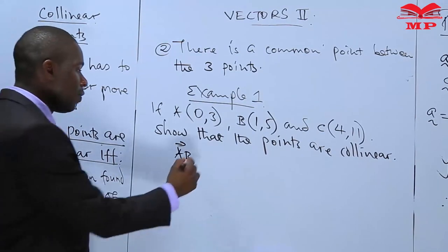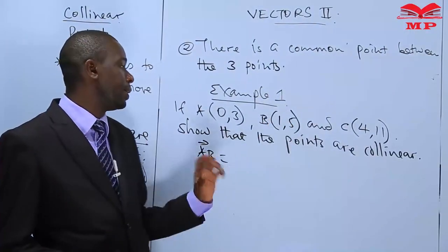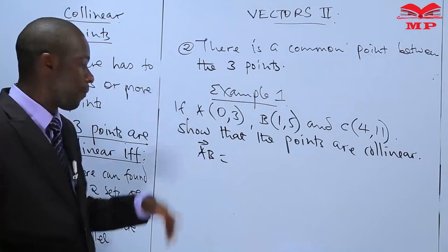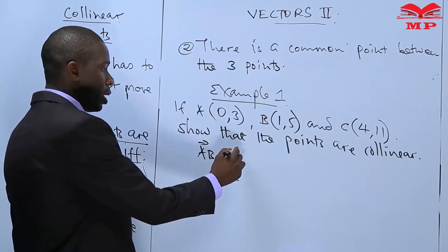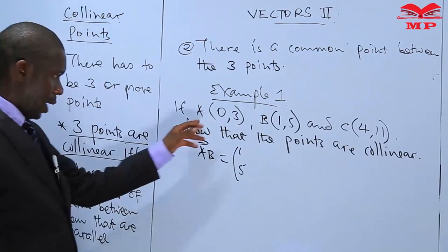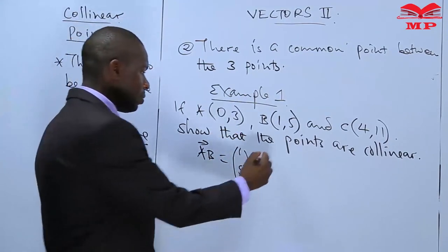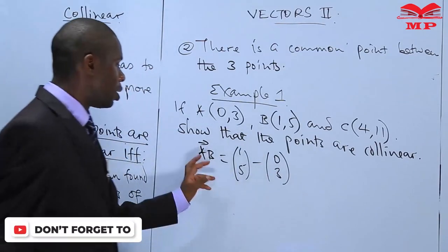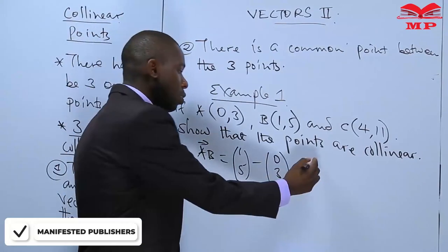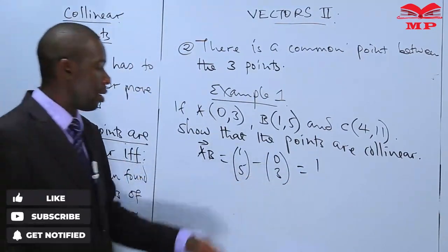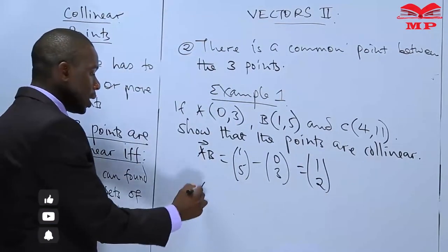Vector AB can be found by subtracting the column values of A from B. So B is (1, 5) in column form and A is (0, 3) in column form. Therefore, vector AB is one minus zero which is 1, and five minus three which is 2. So vector AB equals (1, 2).